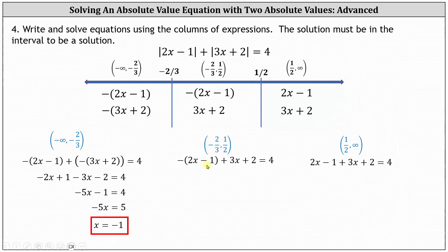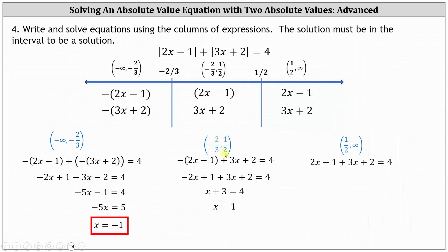For the next equation, removing parentheses: we have negative 2x plus 1, plus 3x plus 2, equals 4. Combining like terms, we have x plus 3 equals 4. Subtracting 3 on both sides gives x equals 1. However, x equals 1 is not in the open interval from negative ⅔ to 1½, because it is greater than 1½. So while it satisfies this equation, it is not a solution to the original absolute value equation — we eliminate it as a solution.